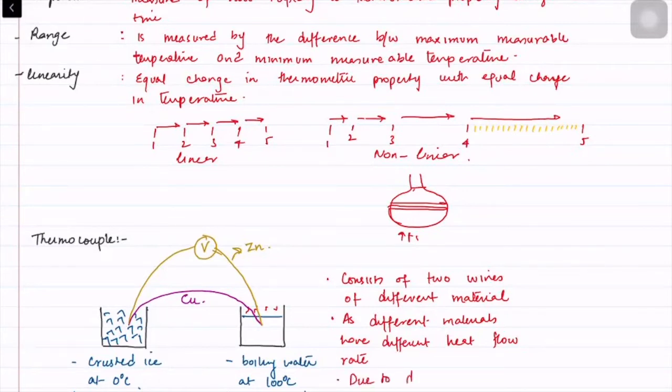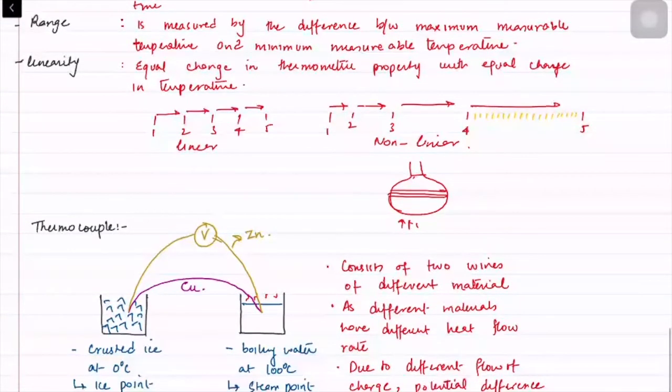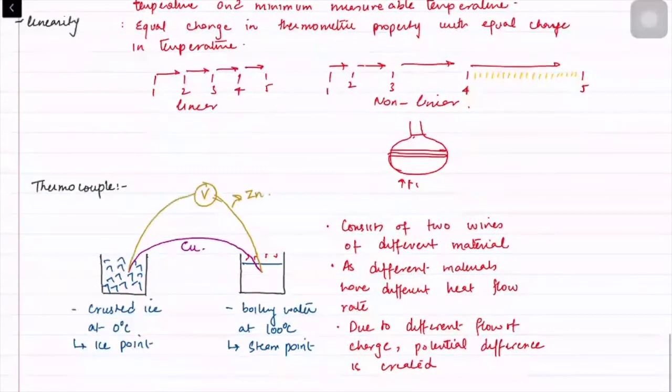Due to different flow of charge, a potential difference is created. So a thermocouple gives you a potential difference for change in temperature. Potential difference is voltage, by the way.